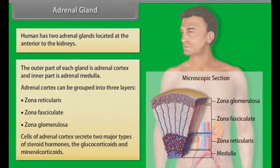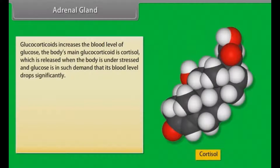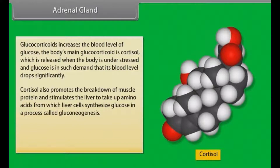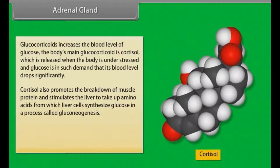Glucocorticoids increase the blood level of glucose. The body's main glucocorticoid is cortisol, which is released when the body is under stress and glucose is in high demand. Cortisol also promotes the breakdown of muscle protein and stimulates the liver to take up amino acids, from which liver cells synthesize glucose in a process called gluconeogenesis.